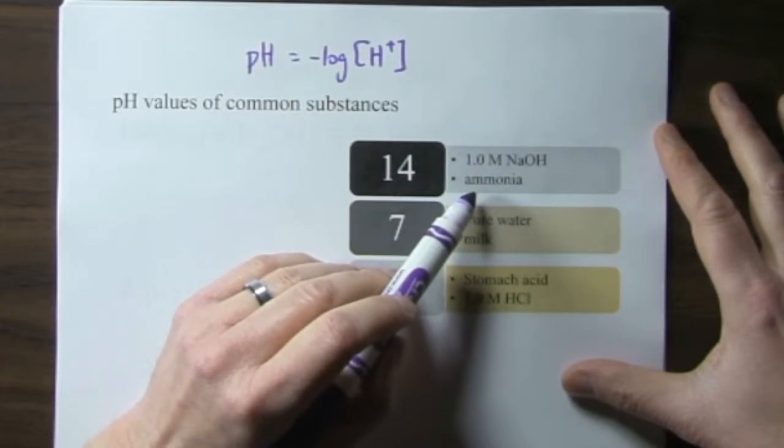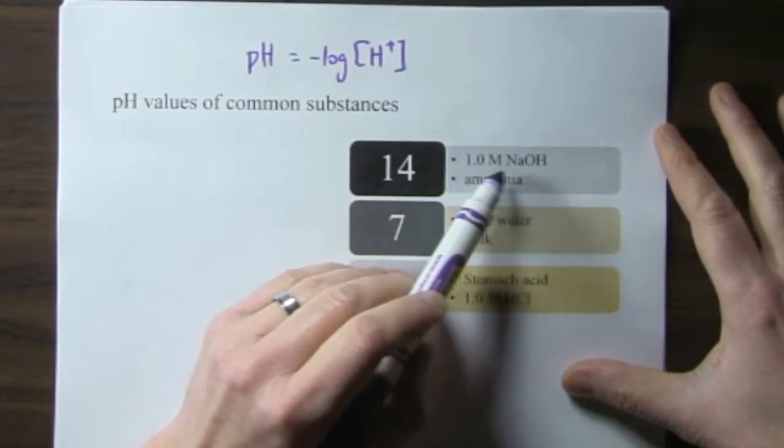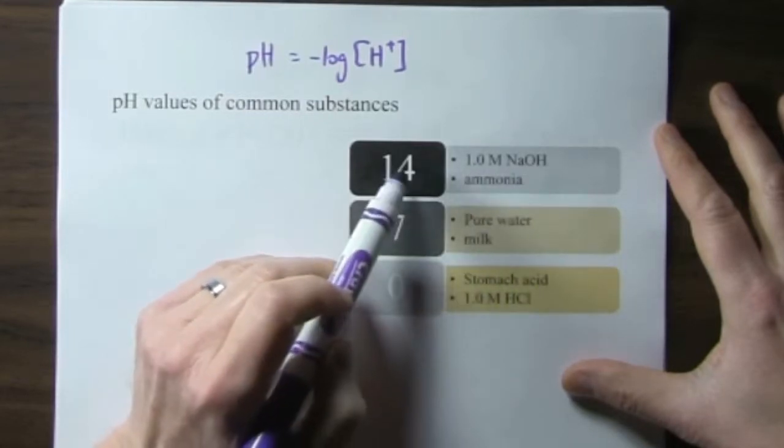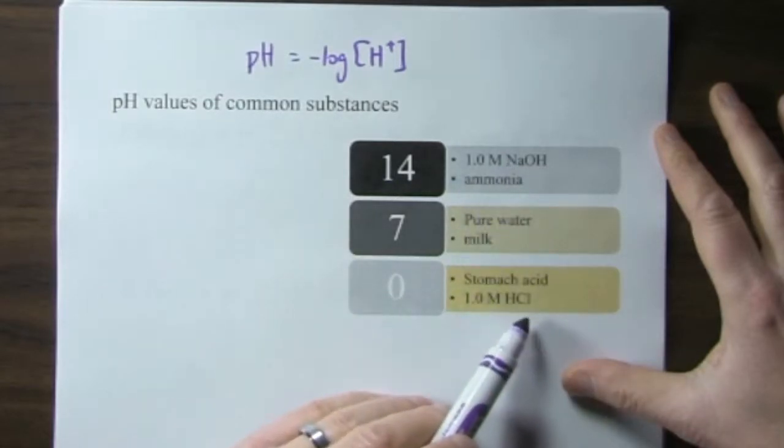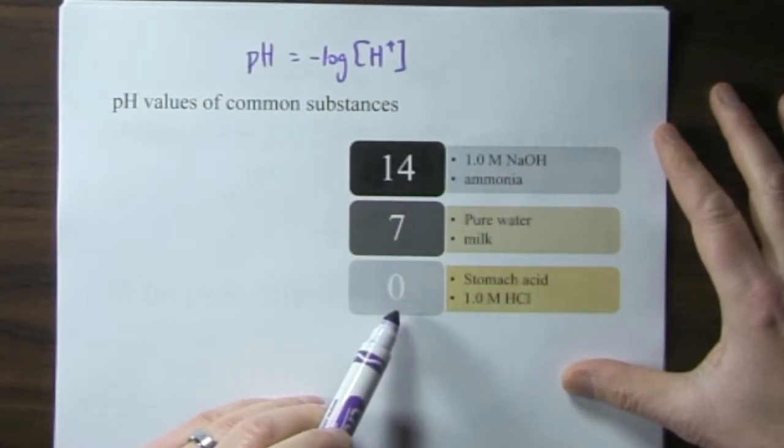Whereas sodium hydroxide, a 1 molar solution, is pH 14. Sodium hydroxide is a strong base. Hydrochloric acid is a strong acid, a 1 molar solution gives a pH of 0.